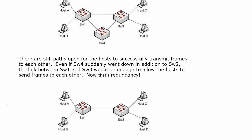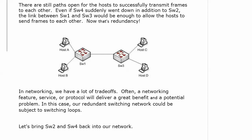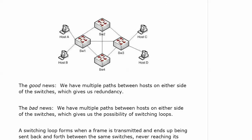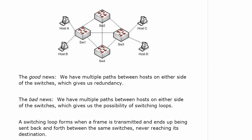As you've already noticed, in networking we have a lot of trade-offs. You learn about a protocol or a feature, you learn about all the benefits, and then there's always a little bit of a negative. Believe it or not, there's a little bit of a negative to go along with having this kind of switched network, because what we could end up with is something called a switching loop. The good news is we have redundancy and multiple paths between hosts. The bad news is the same as the good news — it also gives us the possibility of switching loops.